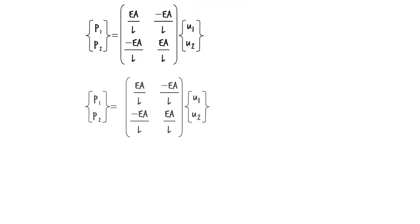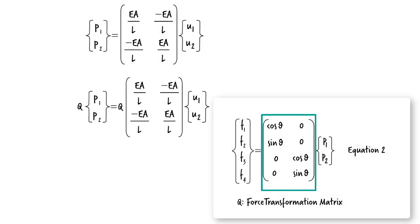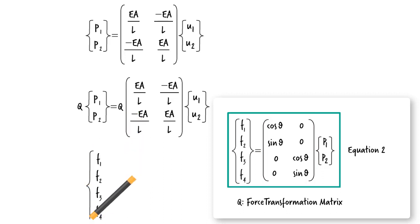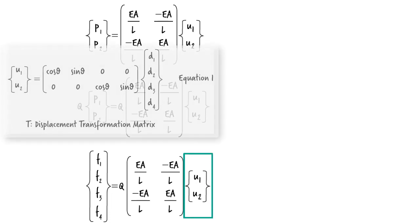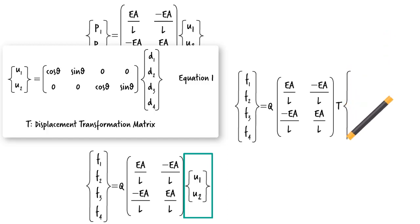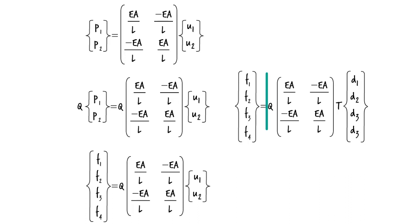Now we are ready to show how to transform the member equations from the local coordinate system to the global coordinate system. We begin with. Multiply both sides of the equation by matrix Q, the force transformation matrix. Given equation 2, we can replace the left-hand side of our equation and obtain. Substituting the right-hand side of this equation with equation 1, we get. Now, all that remains to be done is to determine the product of these three matrices.